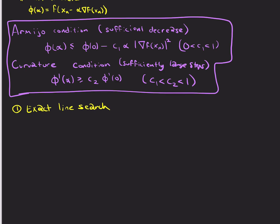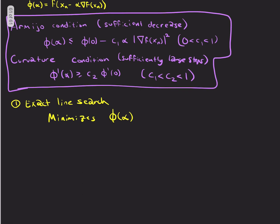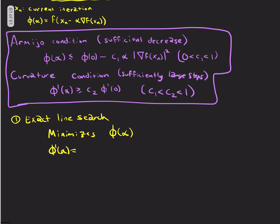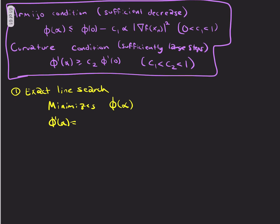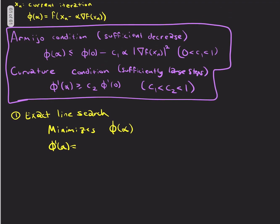So exact line search directly minimizes φ(α). So it solves an auxiliary minimization problem. So, what you do here is you solve, one way is to just call some package that minimizes this directly. But whatever that package does, it would need the gradient.